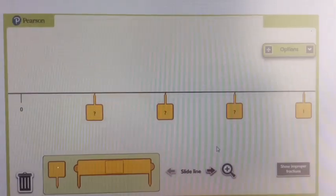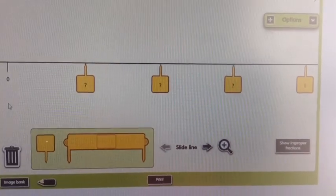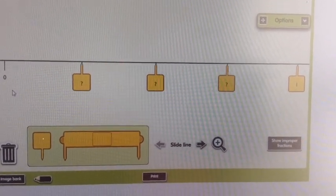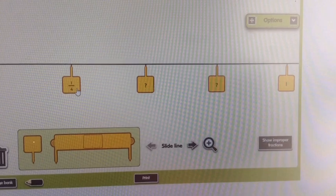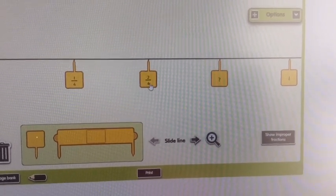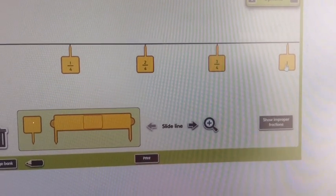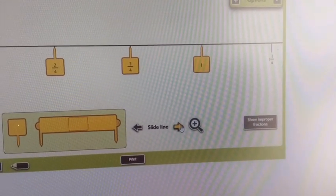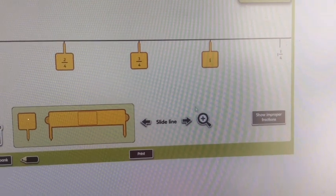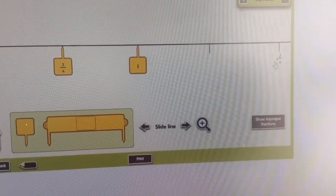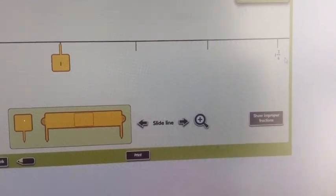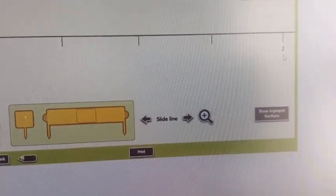What about quarters? If this is zero and this is one, we can count along in quarters again. This would be one quarter, two quarters, three quarters, one. But if we add another quarter, it's one and a quarter, one and two quarters, one and three quarters and then two.